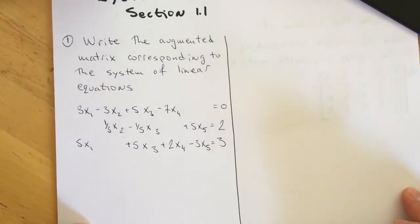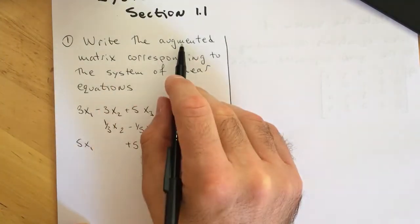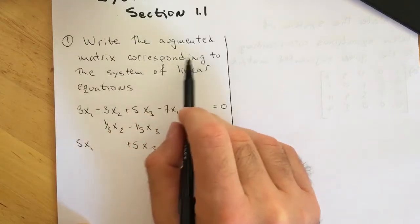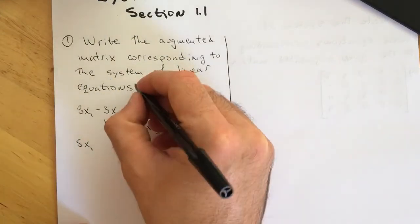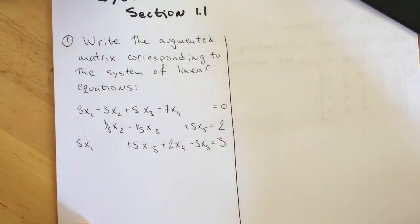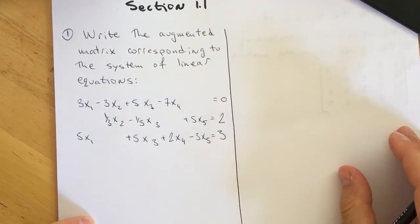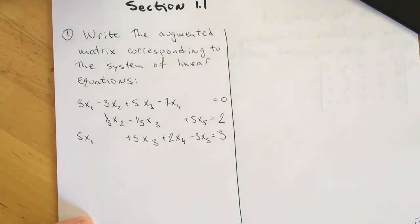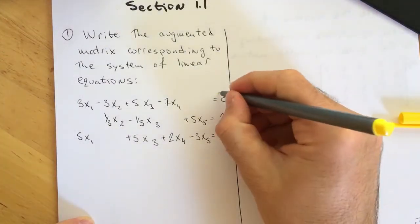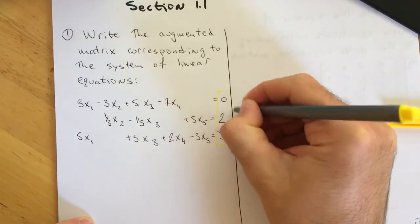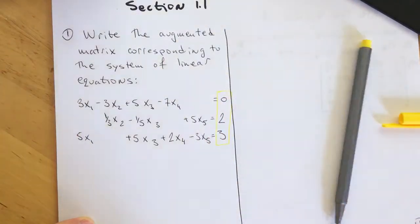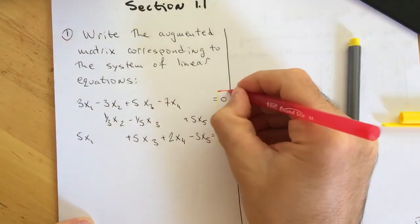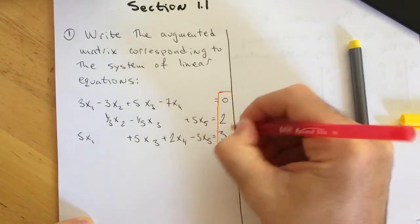The first example is: write the augmented matrix corresponding to the system of the following linear equations. A reminder — what does it mean, an augmented matrix? It means a matrix including these values right here.